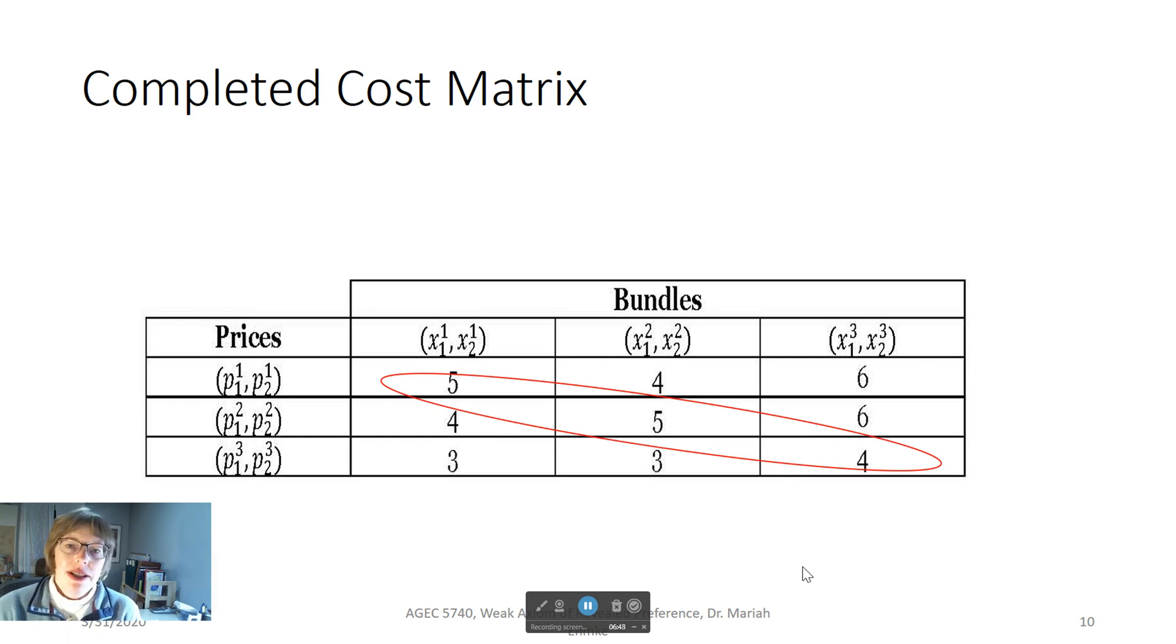How do we see if one bundle is preferred to another? Look at the bundles across the third row on the bottom. The consumer may have chosen X1 to the third and X2 to the third when the prices were P1 to the third and P2 to the third. But it would be more affordable if they could have bought other bundles such as X1 to the first and X2 to the first or X1 to the second and X2 to the second. The cost of each of these bundles would be $3 instead of $4.